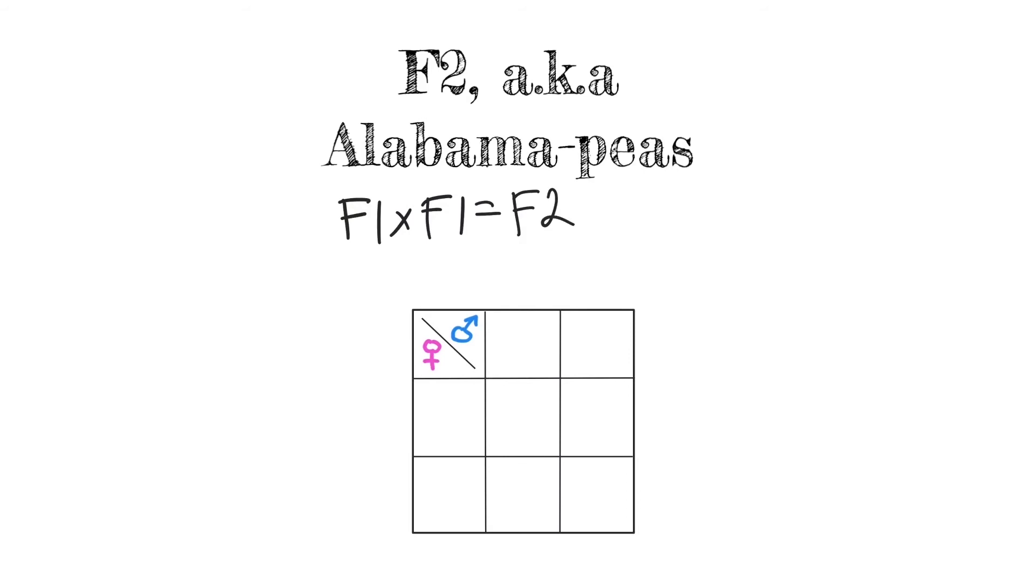And we're going to look at the genotype and the phenotype of those peas. So we have the paternal father pea that has the dominant and the recessive allele. And the same goes for the mother.